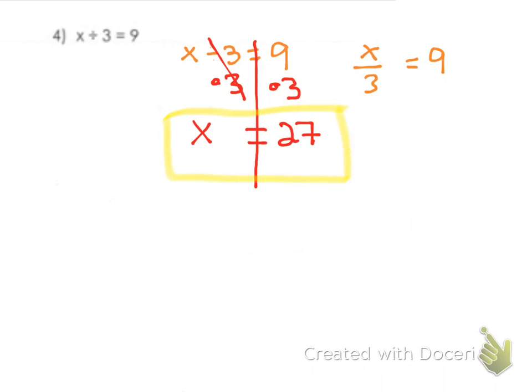We are not quite done yet. We have to double check to make sure that that works. So we plug it back in. 27 divided by 3 equals 9. 27 divided by 3 is 9, which equals 9.